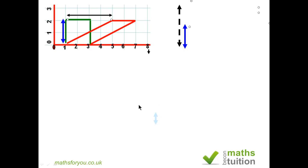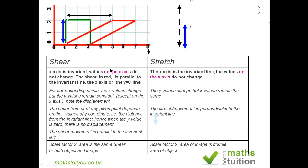For displacement, we measure from the point in question to the corresponding point on the image. In this case it is four. The blue line is the perpendicular distance from the invariant line to the point on the object we are considering. So if you divide four by two, you get two. So the scale factor is two.